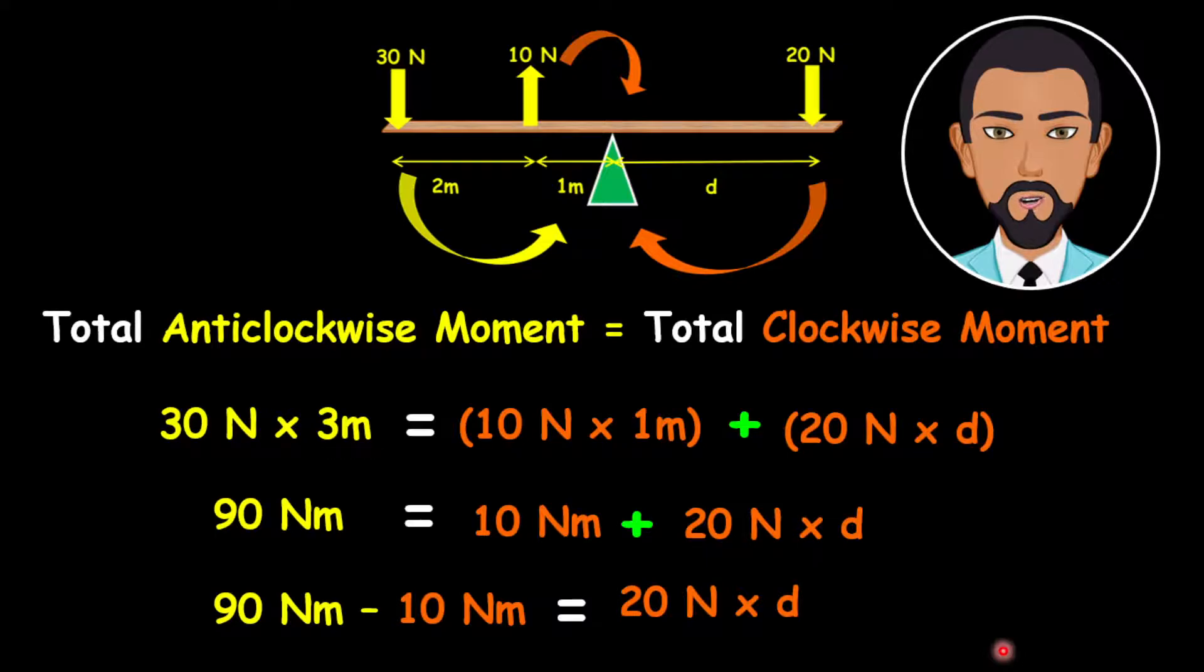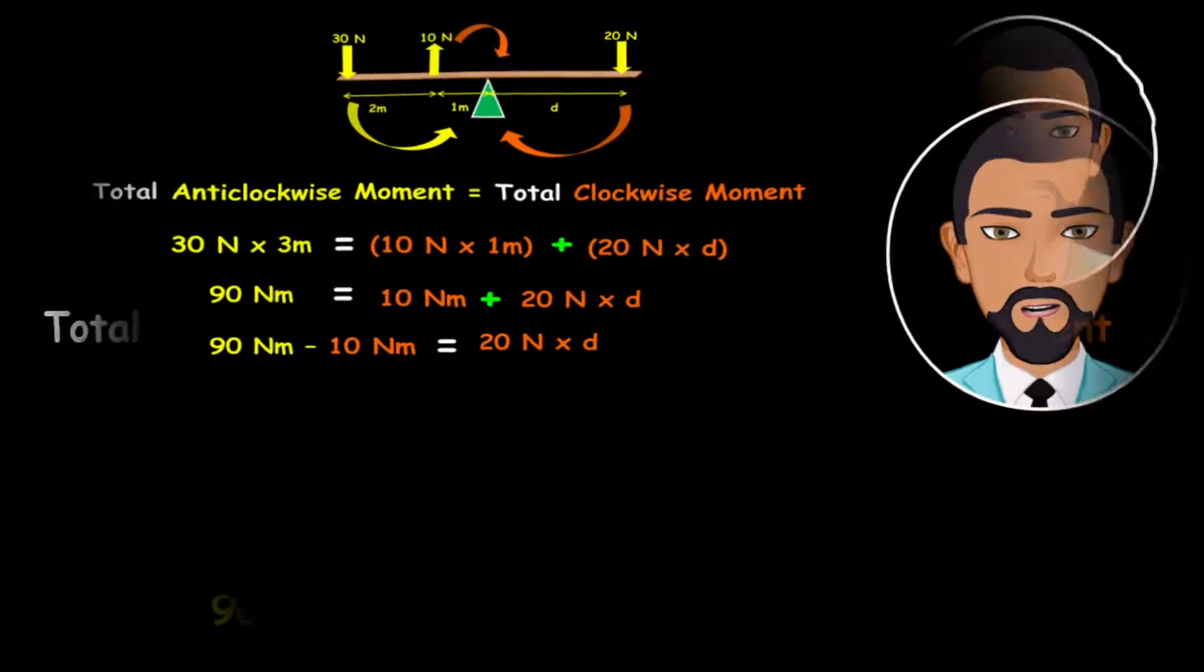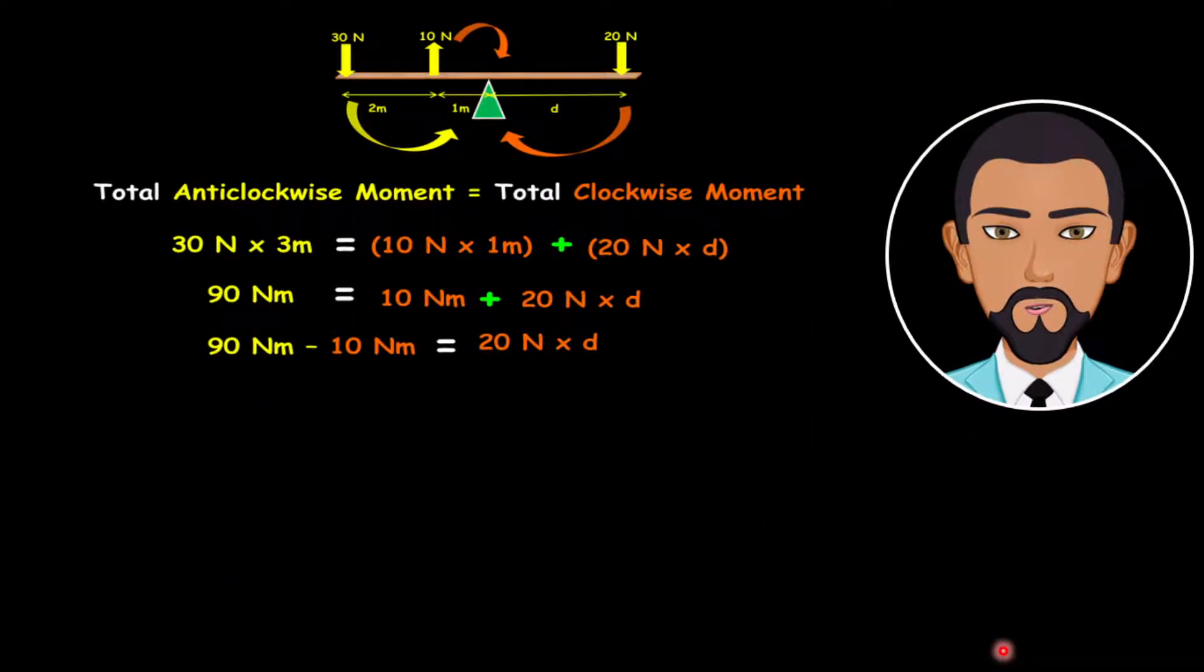Now once we have done this, we're going to our final step. We're going to say 90 minus 10, which will give us 80 newton meter, equivalent to 20 newtons times D. Now again, we're going to get rid of this value right here, and the mathematical sign is a multiplication. So what we're going to do is divide both sides by 20 newtons.